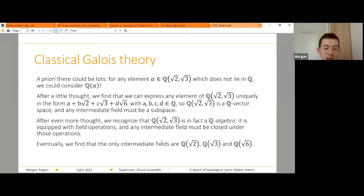And actually any intermediate subfield has to be a sub vector space. So that constrains things a bit, although it seems like there could still be infinitely many, but actually the fact that it has to be closed under the field operations makes the structure of the intermediate subfields very rigid. So in fact, there are only three other than Q and Q extended root two and root three, which are Q extended root two, Q extended root three, and Q extended root six.